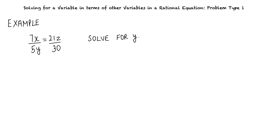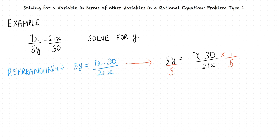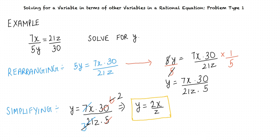The first step is to rearrange the equation so that we have the required variable on one side. Rearranging the equation, we have 5y equals 7x times 30 divided by 21z. Next, we divide both sides by 5 so that we obtain y on one side of the equation. Thus, we get y equals 7x times 30 divided by 21z times 5. Simplifying the expression, we get y equals 2x divided by z.